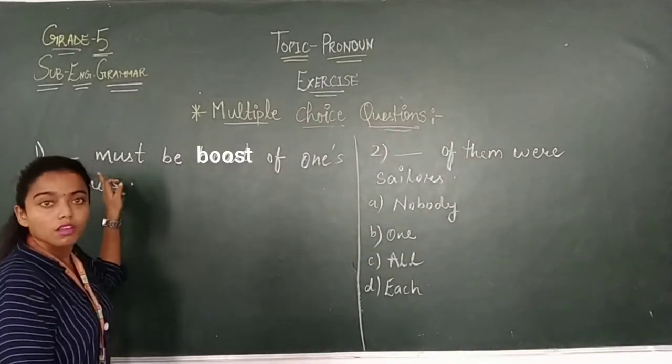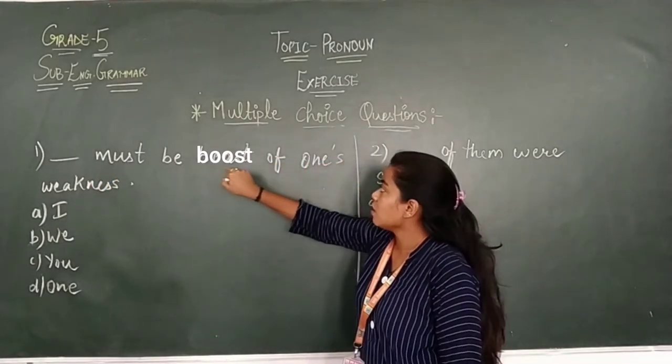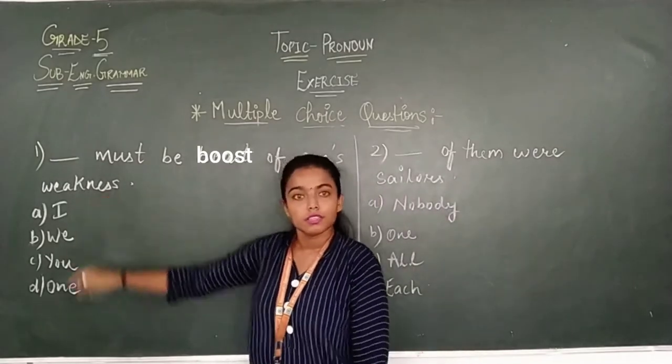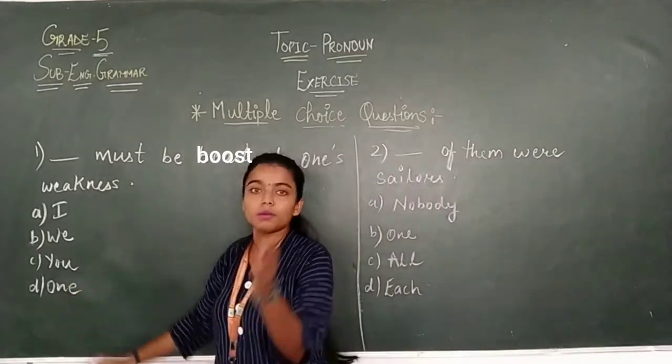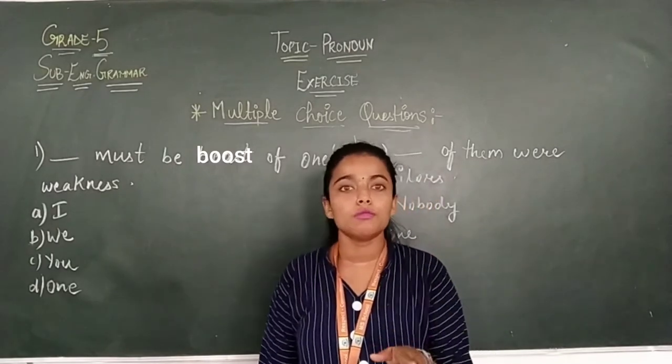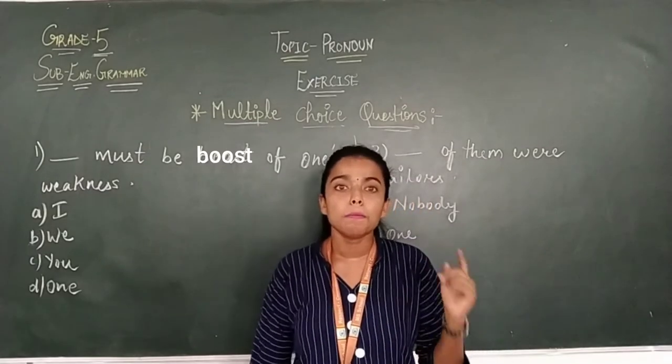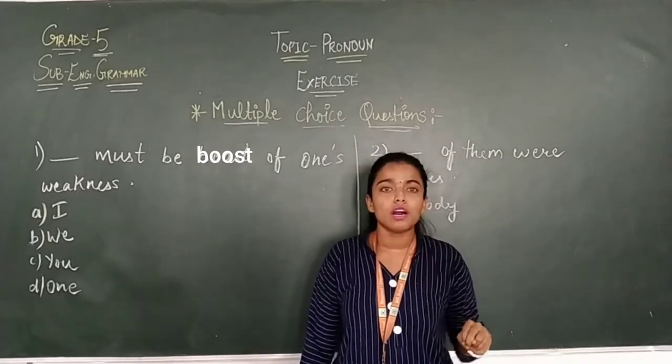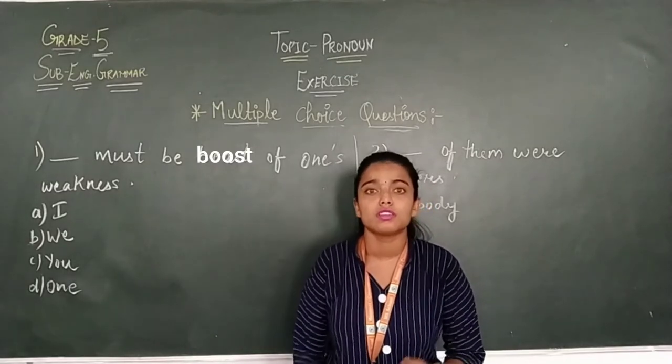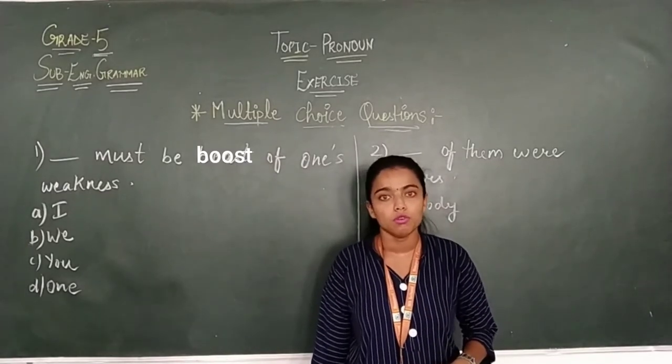So let's begin with the exercise part. First, number one, must dash must be boost of one's weakness. What do we know about pronoun? Right? Singular pronoun, noun, singular, plural. There are both nouns, singular and plural. But we use two nouns. You must be used in the telling part but it can be used in the singular and it can be used in the plural form also.